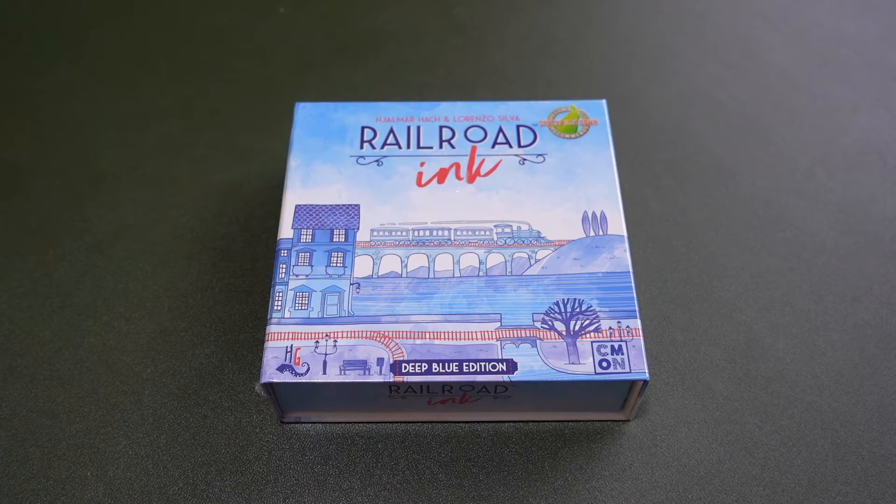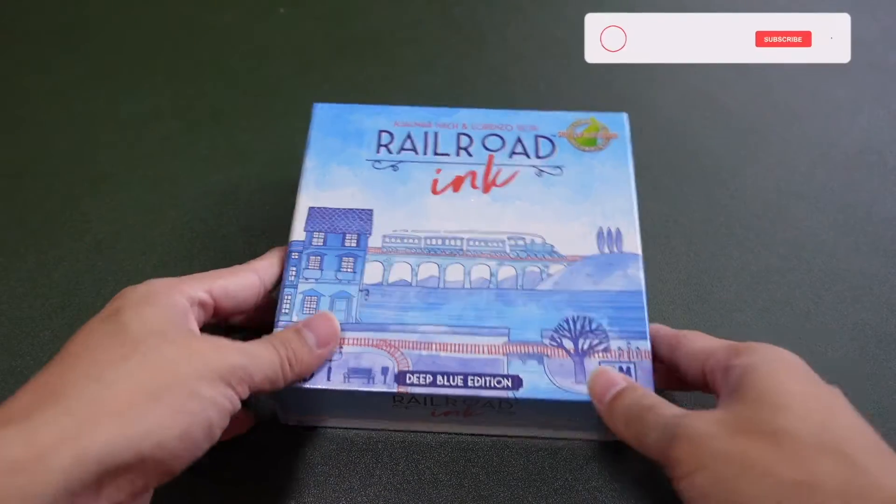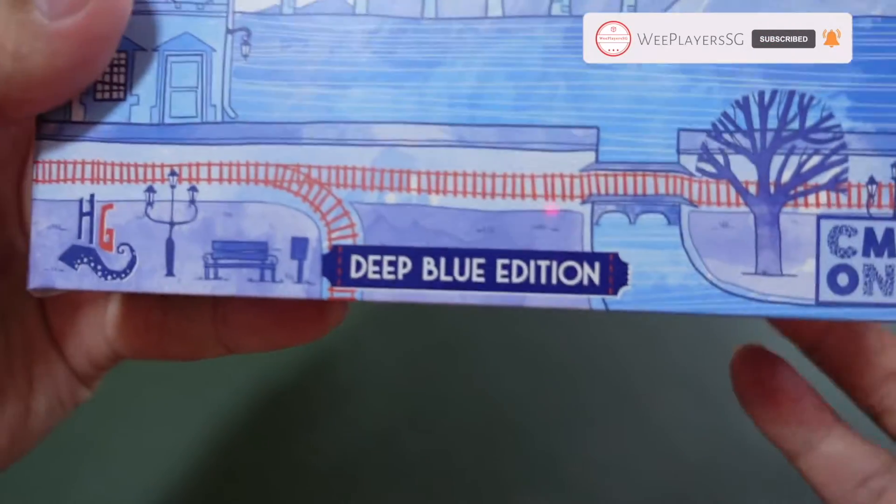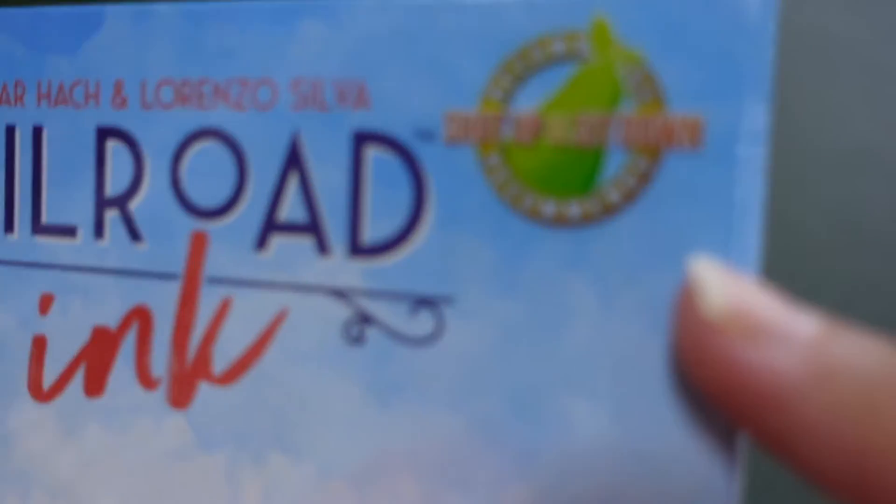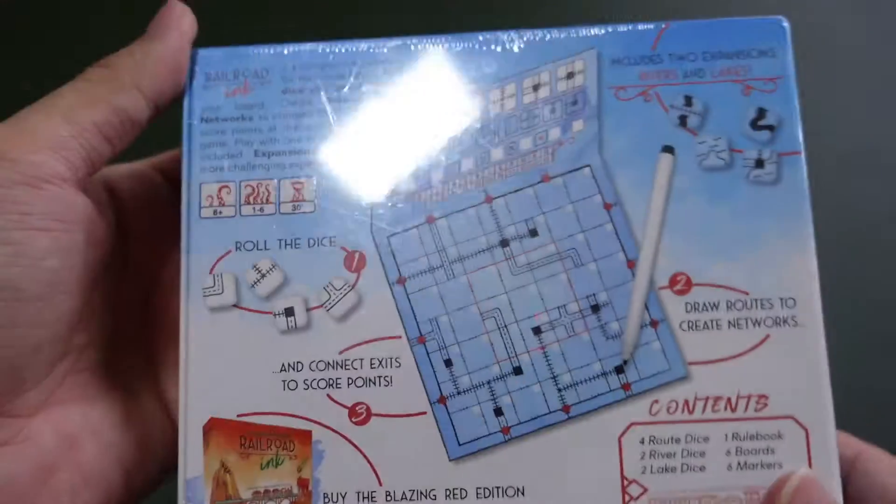Hi guys, welcome back to We Players SG where we unbox, review, and show you how these games are played. So today we have Railroad Ink, the Deep Blue Edition by Schmidt Games. It's Shut Up and Sit Down approved and recommended.